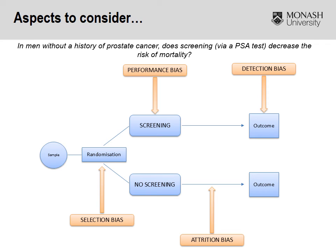Most of the time, blinding assessors is possible. Some would argue that, depending on the outcome, it may not even be necessary. For something like mortality, you can't really manipulate those results if you're drawing from registries and similar sources that have recorded this particular outcome.